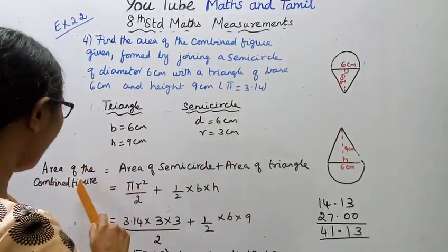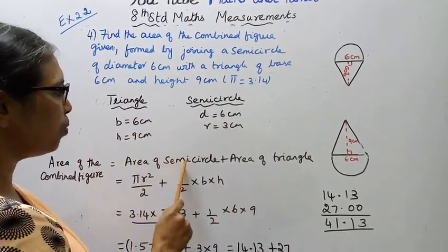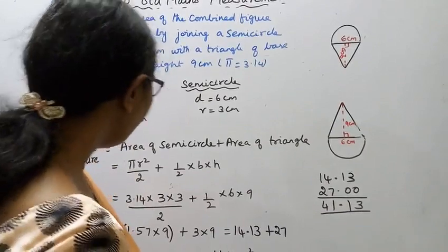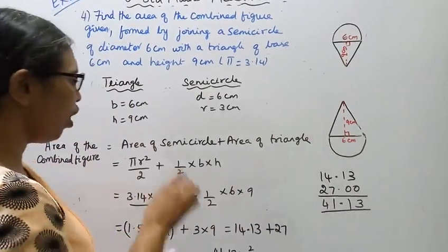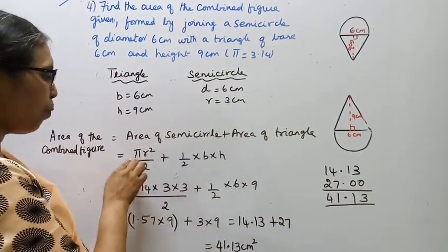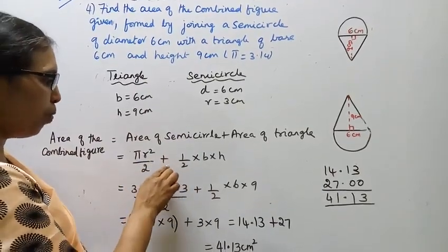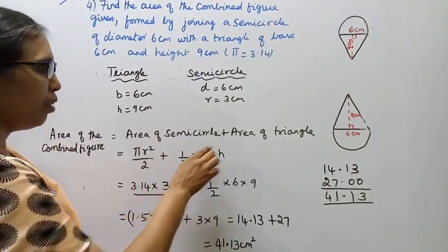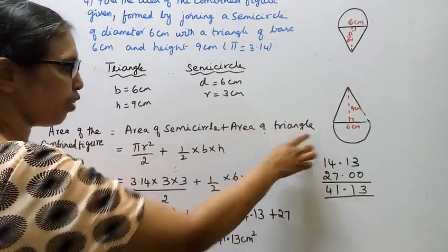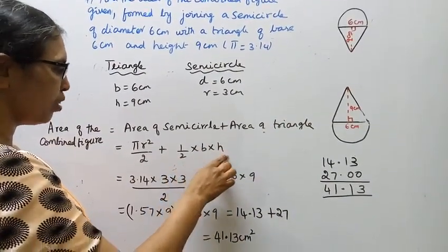Area of the combined figure equals area of semicircle plus area of triangle. Area of semicircle formula: the area of a circle is pi r squared, so for semicircle divide by 2. Area of triangle formula: half into base into height.